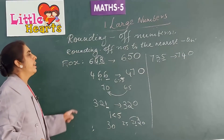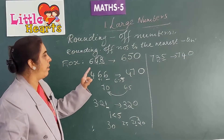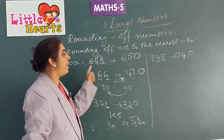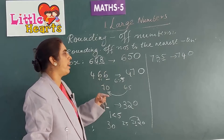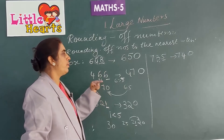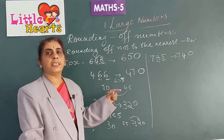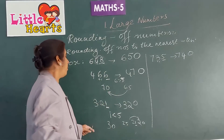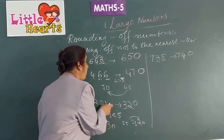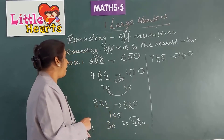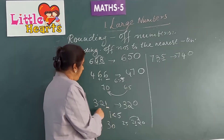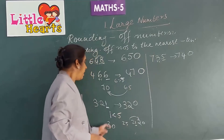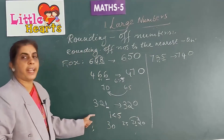So children, if the ones place digit is greater than or equal to 5, you should go to the next 10. If it is less than 5, you should go to the previous 10 and there will be no change in the tens place digit.